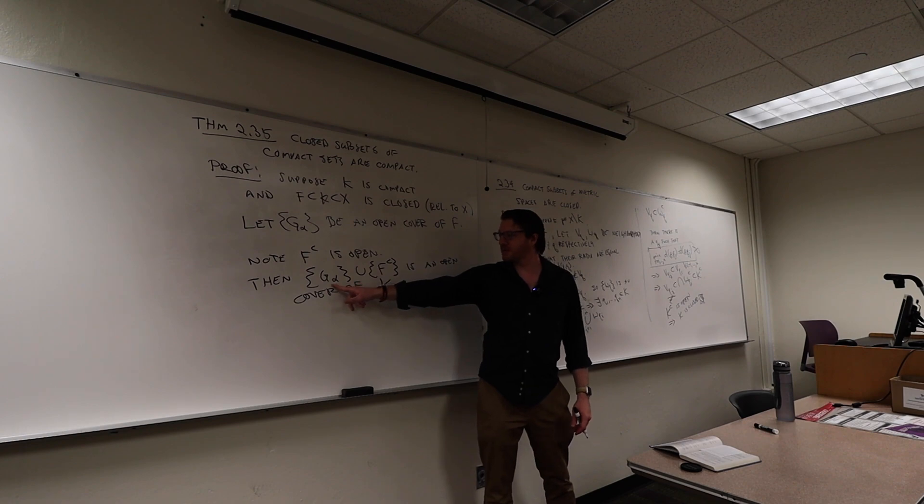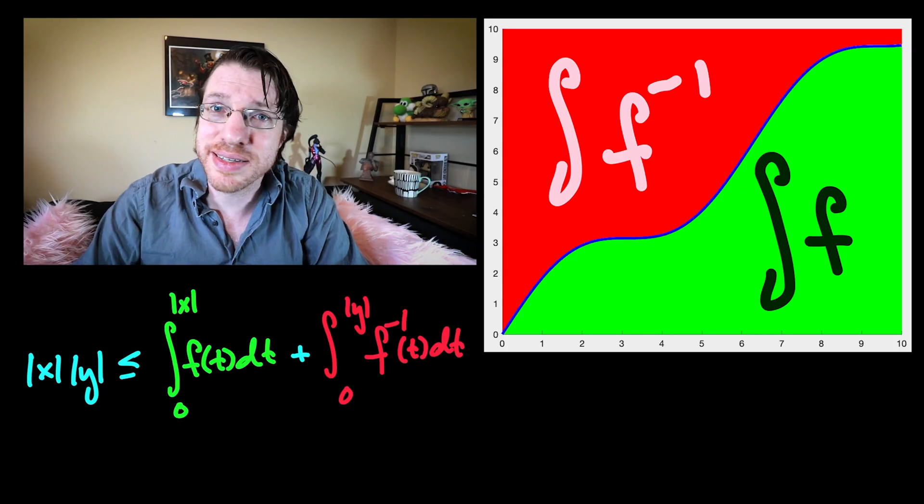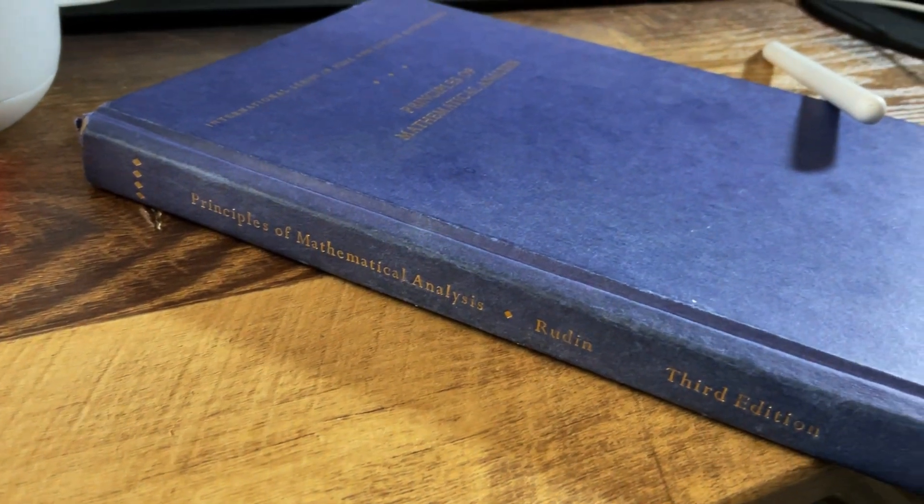Mathematics consists of the random collection of theorems that humans have managed to prove. However, when you see a theorem in a book, it's usually right where it is for a reason. Sometimes even if a book doesn't tell you why it's there, a little bit of thought can help you intuit exactly what the theorem is really saying. Doing this right sometimes takes looking at the contrapositive, looking at naming conventions, and other clues within the chapter.